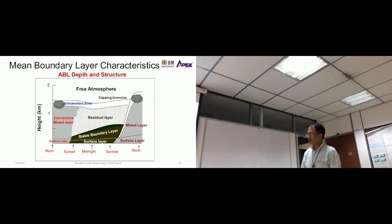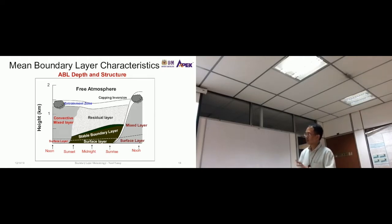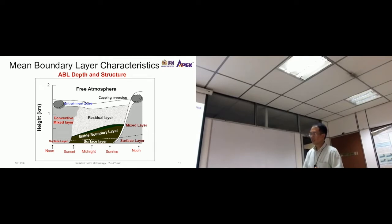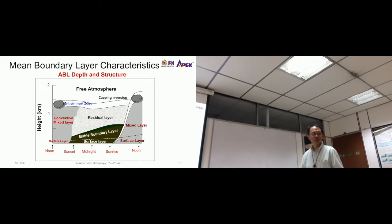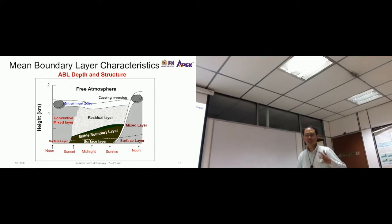At night, if you go a bit higher, you can experience the stable boundary layer where there is less mixing compared to the convective mixed layer. The key difference between the convective mixed layer and the stable boundary layer is the degree of turbulence. In the mixed layer, there is a lot of vertical motion; the stable boundary layer has less vertical motion and less turbulence.